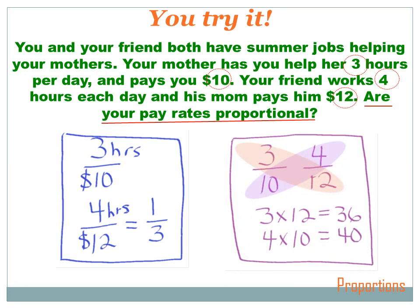There's another way — I could use cross products. Again, it's important to be consistent: hours over dollars in both fractions. Three times twelve equals thirty-six. Four times ten equals forty. They don't equal each other, so those pay rates are not proportional.